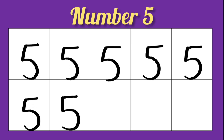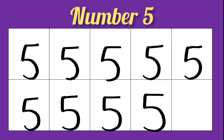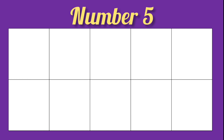If you make a mistake, erase and write again. 5 number. Sleeping line, standing line, reverse C. Bottom line touch. Very good. Now you know how to write 5 number.